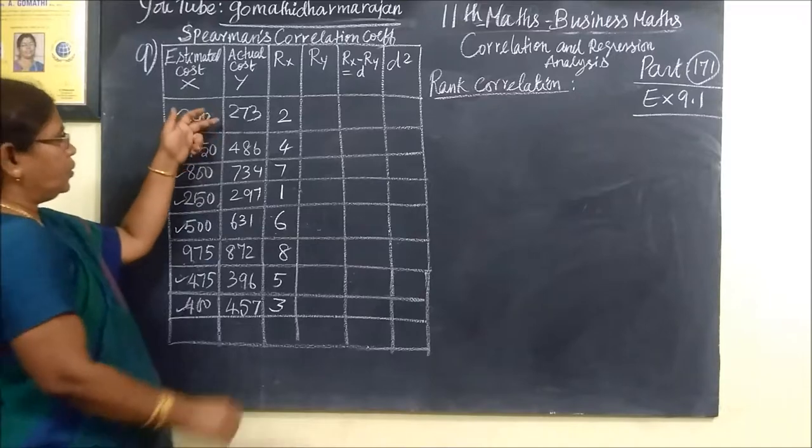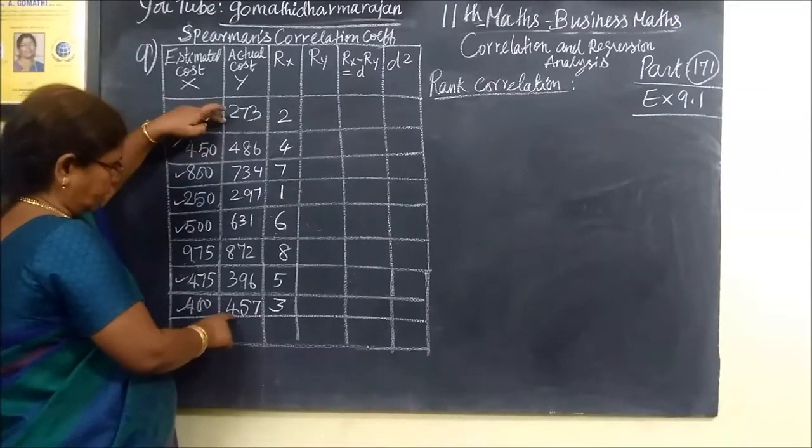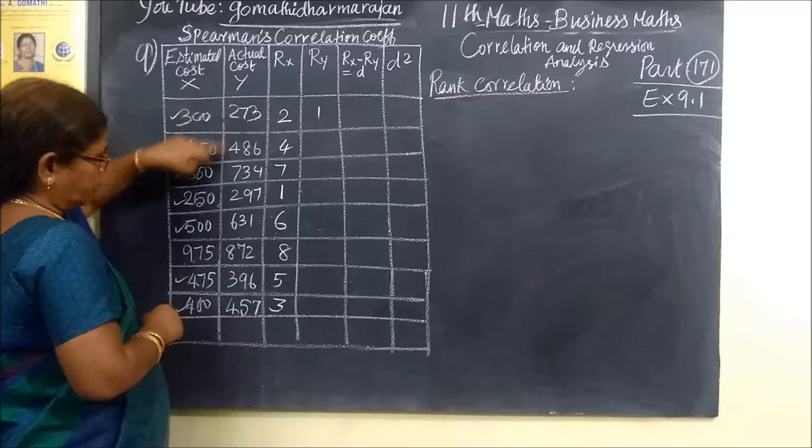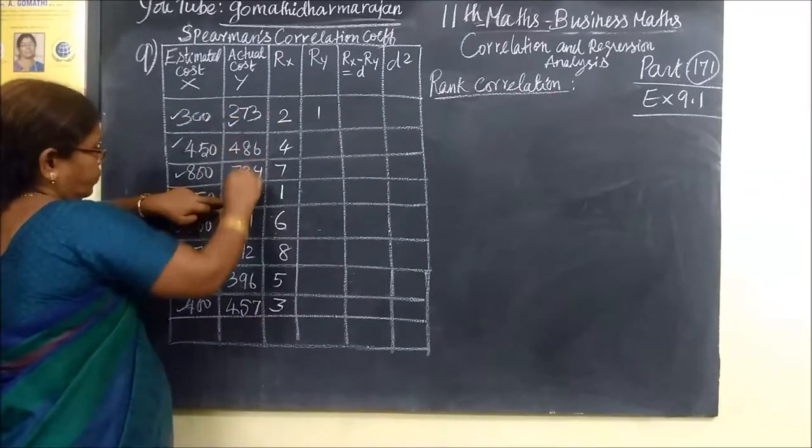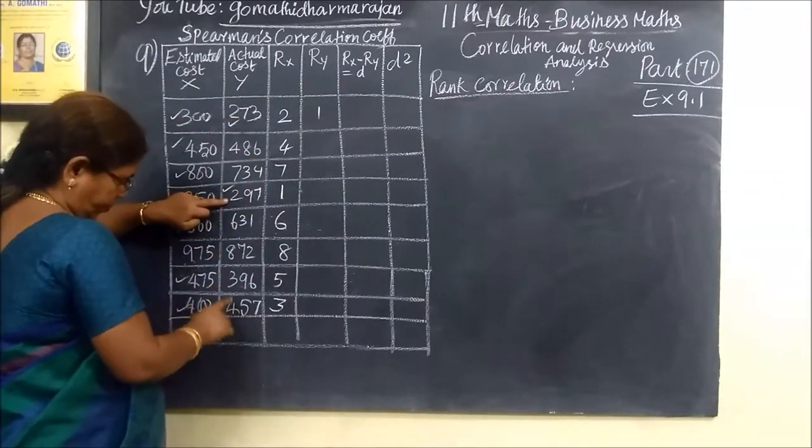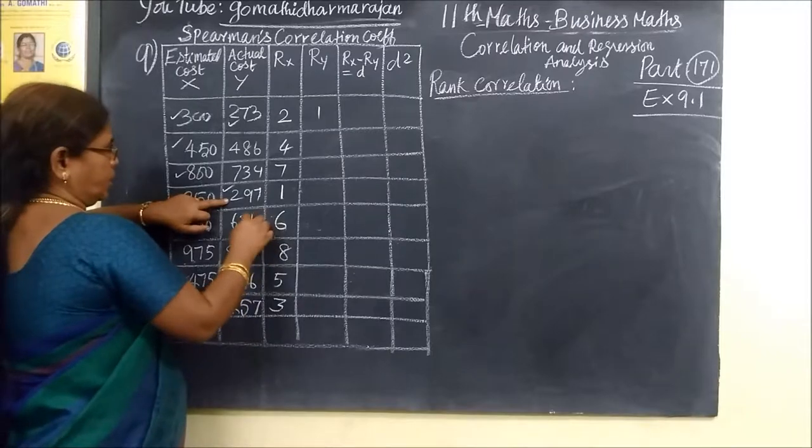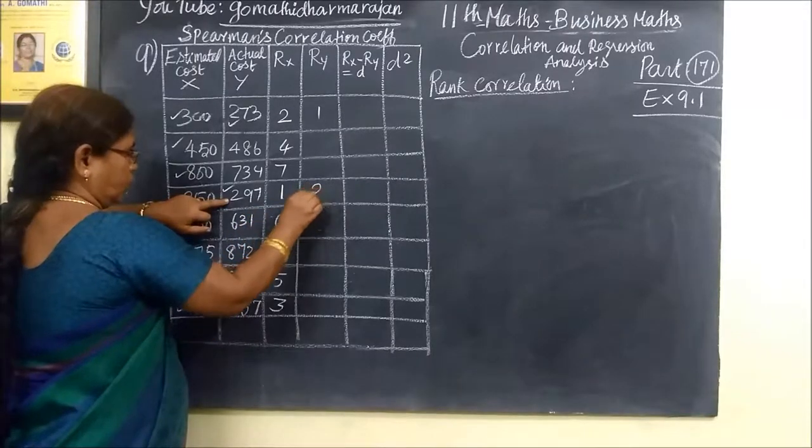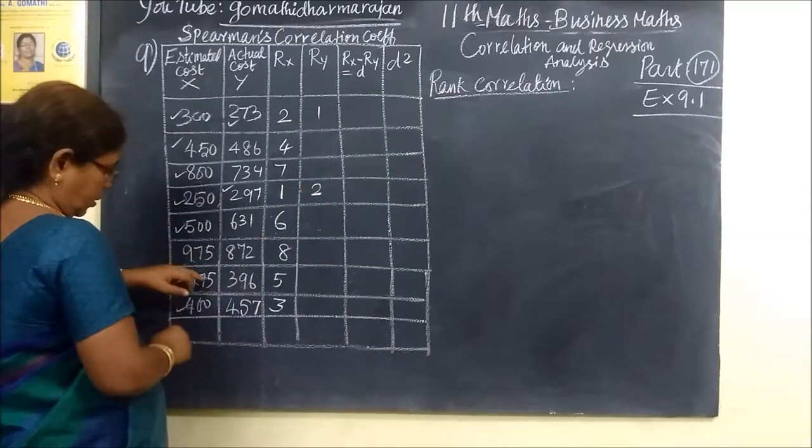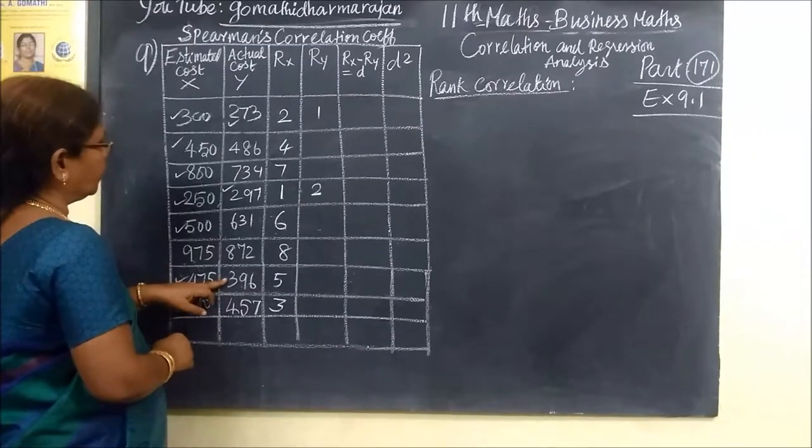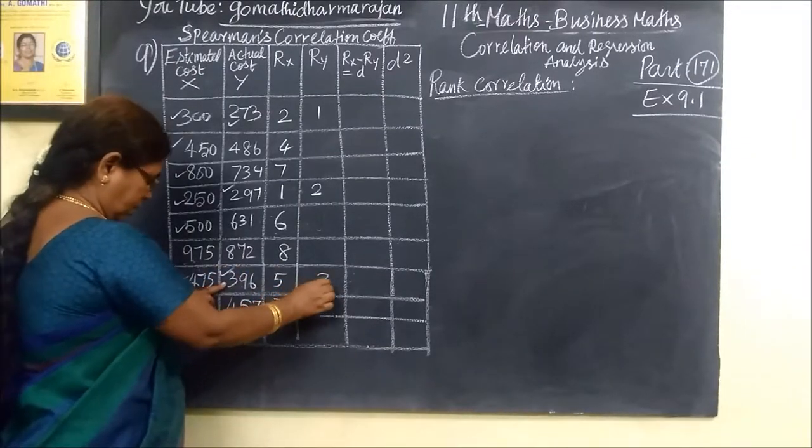After coming to the next one, 273. So 273 is 1. Then 297 is 2. Then 396 is 3.